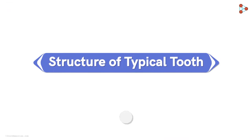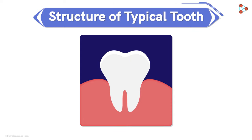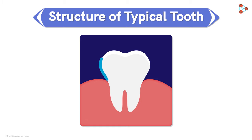To understand teeth, let's begin with knowing the structure of a typical tooth first. A tooth consists of two main regions — one which is above the gum surface and the other which is present below it.